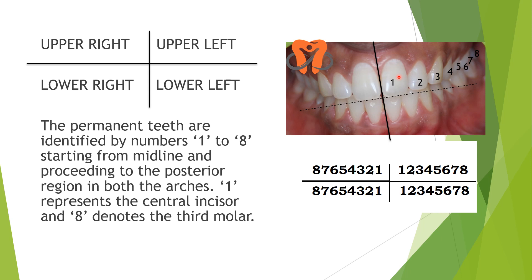Each tooth is identified by a different number, starting from one through eight. One represents the central incisor, two the lateral incisor, three canine, four first premolar, five second premolar, and so on till the third molar. So we have one to eight in each quadrant. It is a very nice pictorial description of the teeth in different quadrants. For example, one designation here means right maxillary second premolar, and another means left maxillary central incisor.